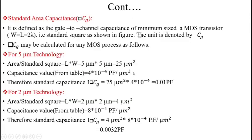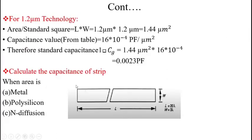Based on the technology used, the standard area capacitance value varies. Therefore, the standard area capacitance depends upon the technology. Now we consider a strip line and estimate its capacitance. The strip is considered for metal, polysilicon, and n-diffusion layers.